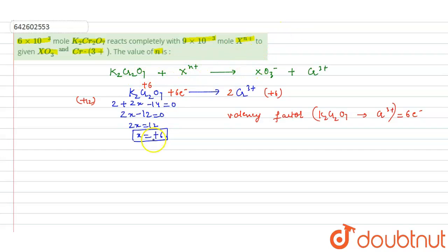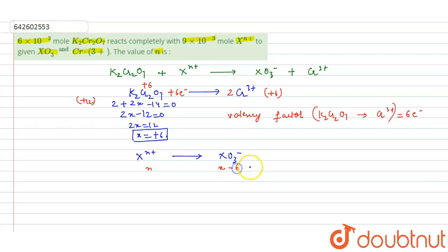For Xⁿ⁺ converting to XO₃⁻: the oxidation state of X in Xⁿ⁺ is n. In XO₃⁻, let the oxidation state of X be x. For one oxygen atom it is −2, so for three oxygen atoms it will be −6. The charge on the compound is −1, so x − 6 = −1, giving x = +5. So the oxidation state of X in XO₃⁻ is +5.